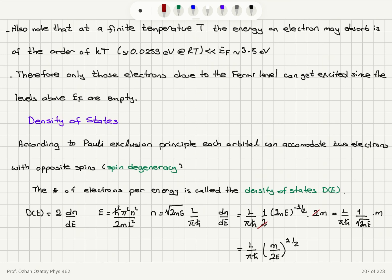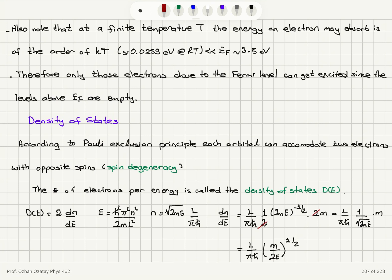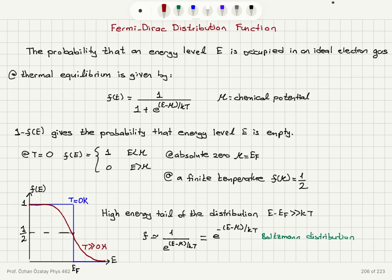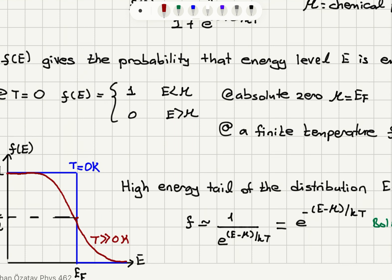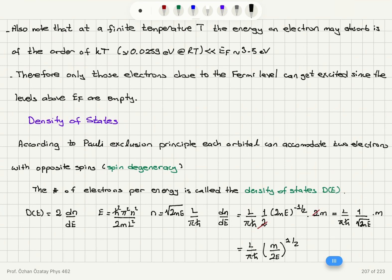At a finite temperature, the energy an electron may absorb is of the order of thermal energy kT, about 0.0259 eV at room temperature. The Fermi energy is typically between 3 to 5 eV, so this energy is rather low. Only electrons close to the Fermi level can get excited above it, redistributing into states above the Fermi level.